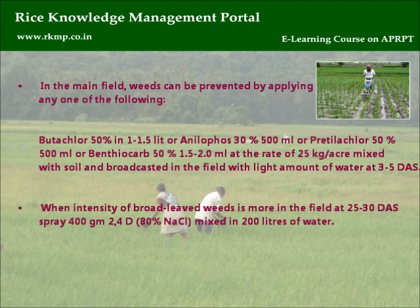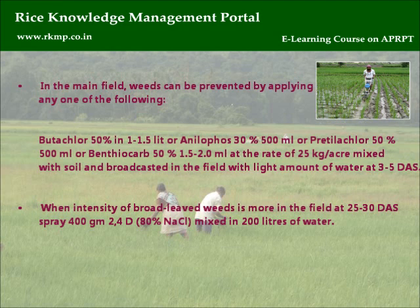Butachlor 50% at 1-1.5 liters, or Anilofos 30% at 500 ml, or Pretilachlor 50% at 500 ml, or Benthiocarb 50% at 1.5 to 2.0 liters, mixed with 25 kg of soil and broadcasted in the field with a light amount of water at 3-5 DAS. When intensity of broad-leaved weeds is more in the field at 25-30 DAS, spray 400 grams of 2,4-D 80% sodium salt mixed in 200 liters of water.